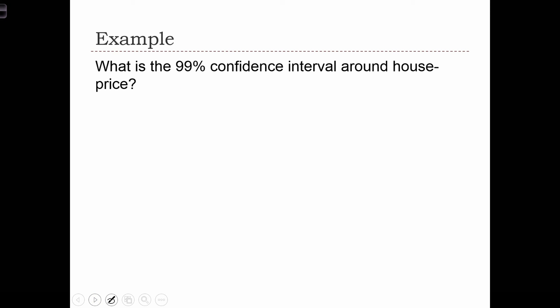So when we want to calculate a confidence interval, we're going to have to find out which z-score to use, and that is going to be based on the confidence level. In this question, what is the 99% confidence interval around a house price? The confidence level is 99%. We're going to use a table in order to find out what the z-score should be in this case.